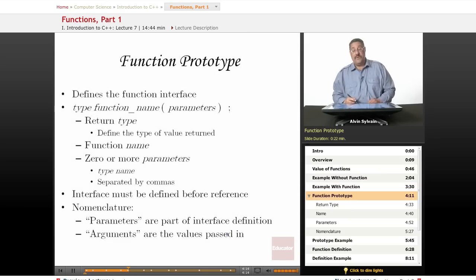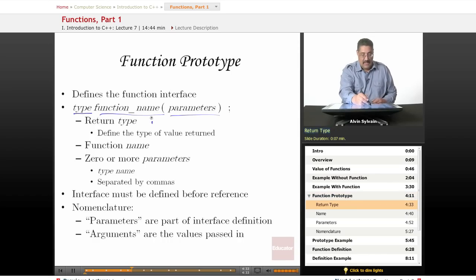Now, the prototype: your function prototype has to come before the function is used. It consists of your return type, the name of the function, and some parameters, if any. The type can be like int or bool or any of the user-defined types.